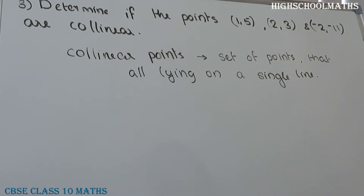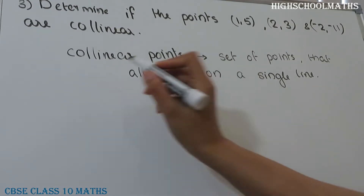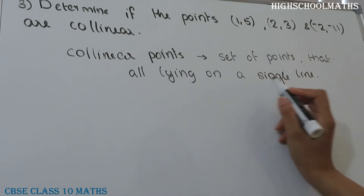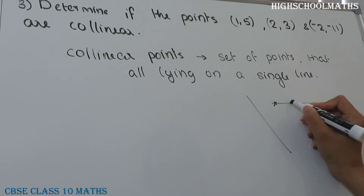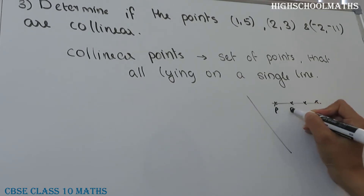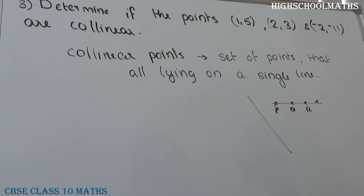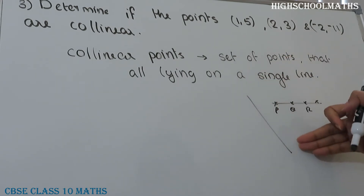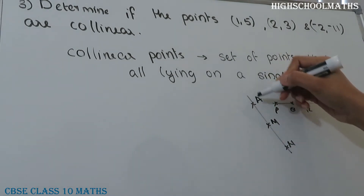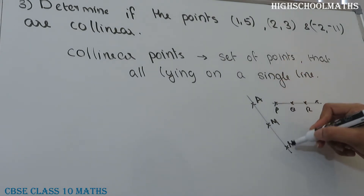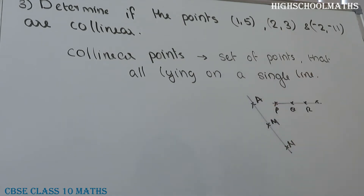First, let's see what collinear points are. We have a set of points that lie on a single line. This is a single line, and we have points on it — this is a point, this is a point, this is a point. Points A, M, N lying on that single line are called collinear points.